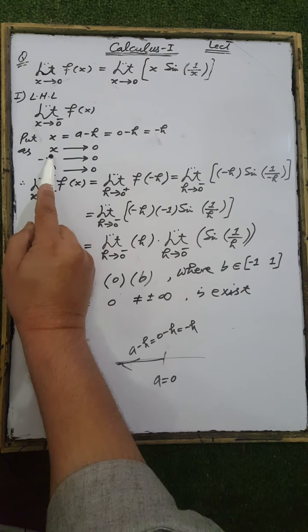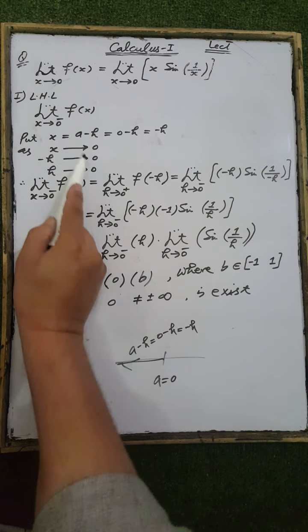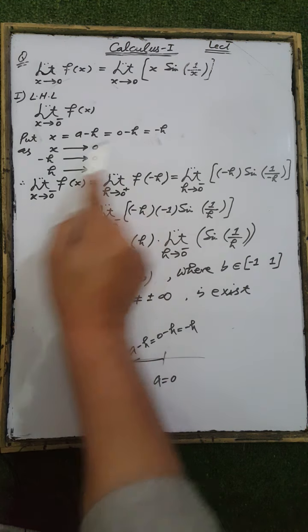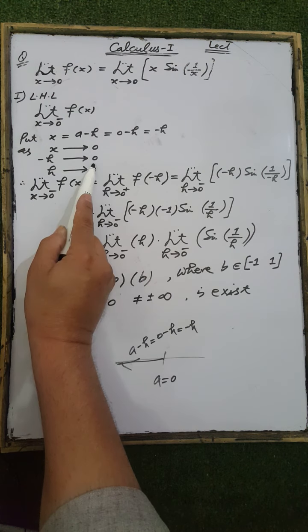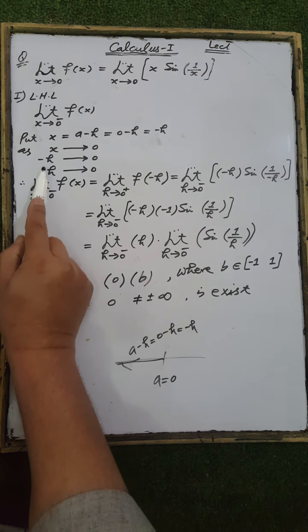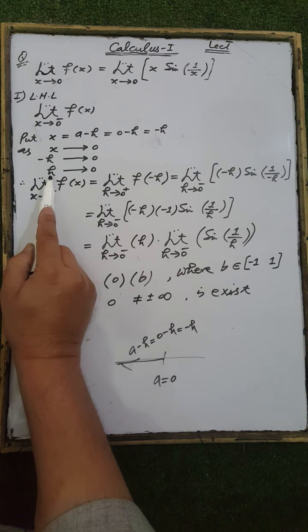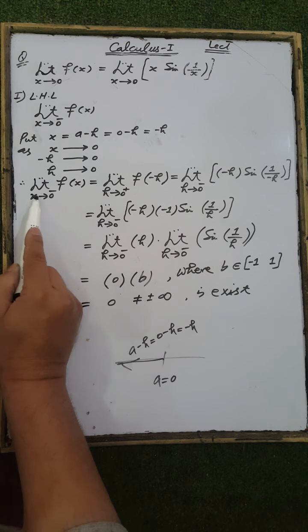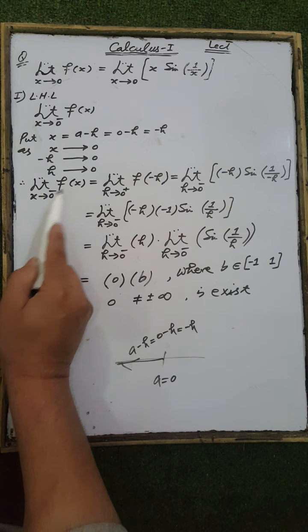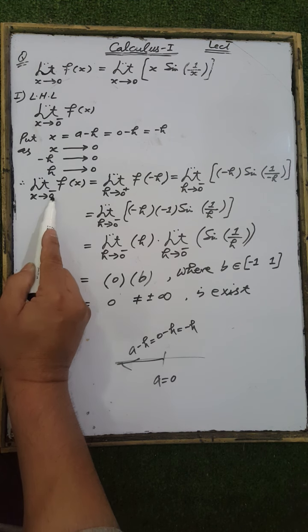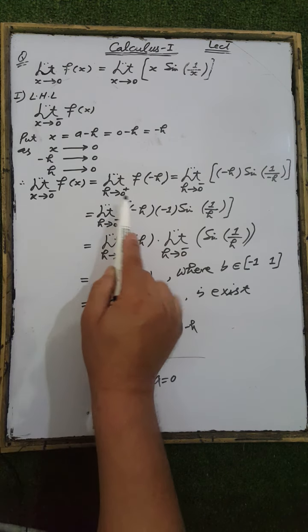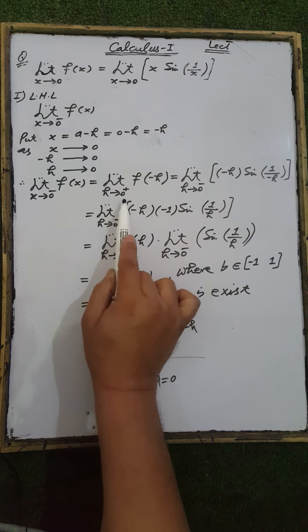As x tends to 0, replace x by minus h: minus h tends to 0, which means h tends to 0. Therefore, the limit of f(x) when x tends to 0 from the left side is equal to the limit of f(minus h) as h tends to 0.